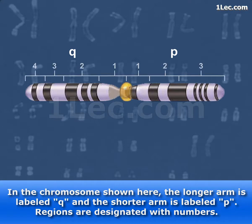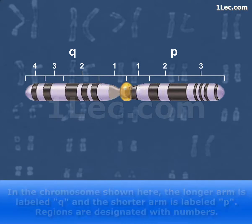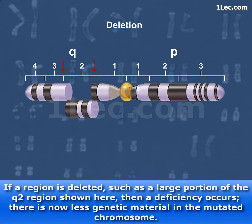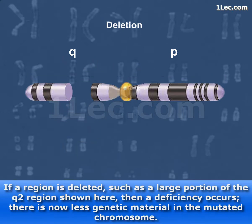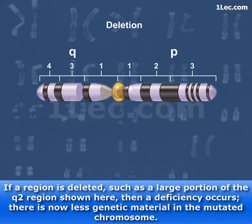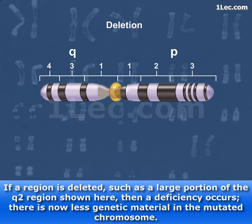Regions are designated with numbers. If a region is deleted, such as a large portion of the Q2 region shown here, then a deficiency occurs. There is now less genetic material in the mutated chromosome.